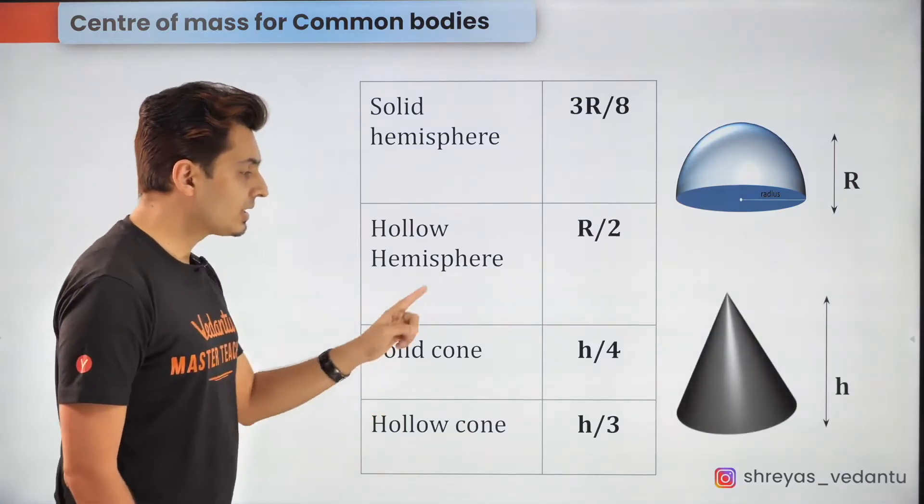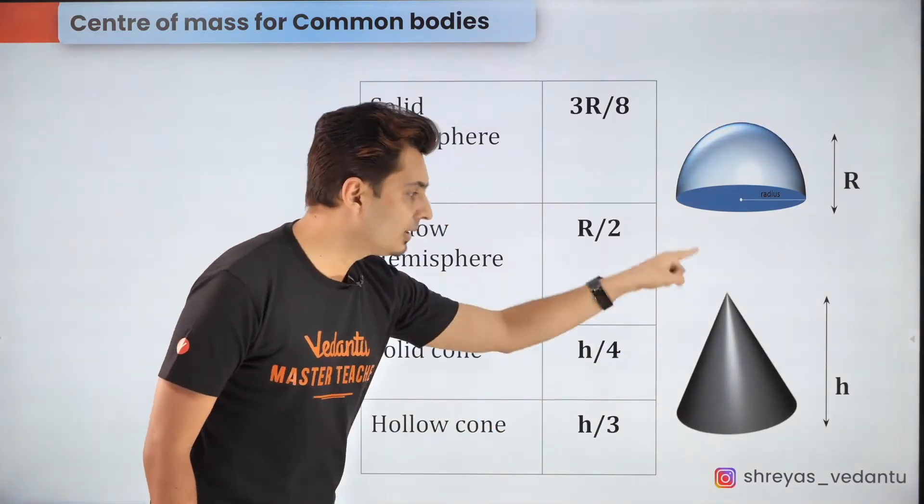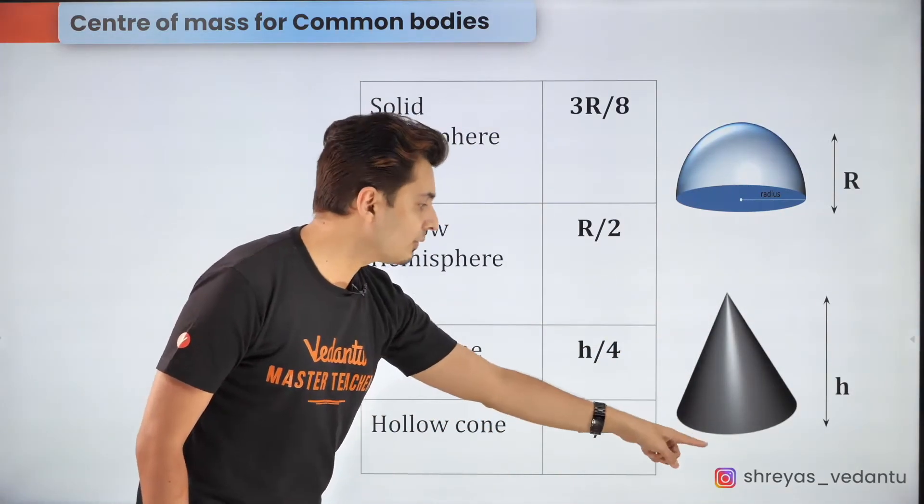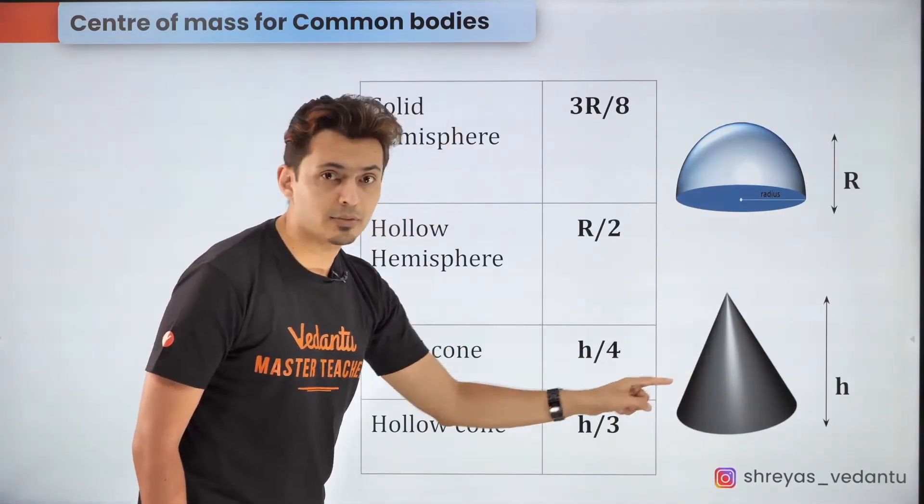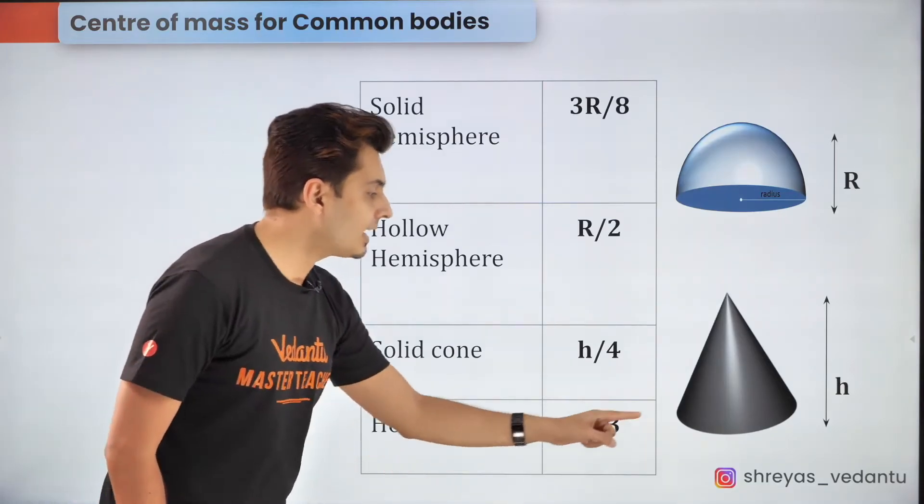Now for a cone the center of mass again lies on the axis of symmetry and from the base for a solid cone it lies at a distance of h by 4 whereas for a hollow cone it lies at a distance of h by 3 again measured from the base.